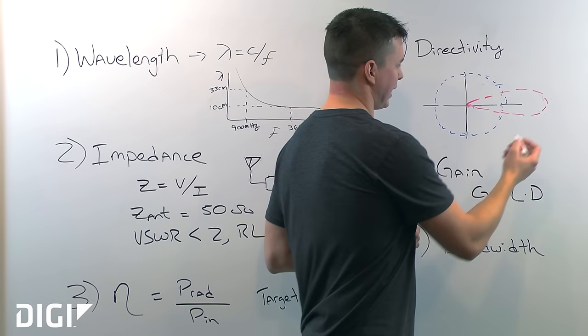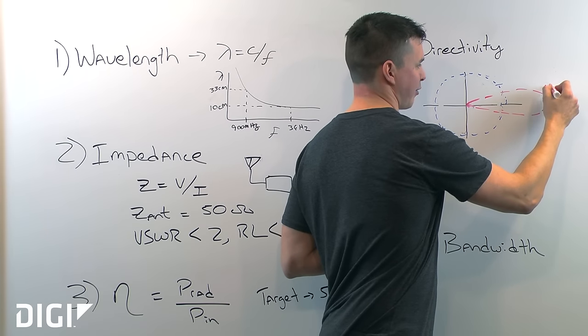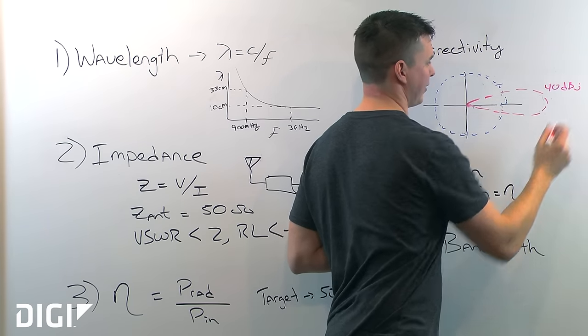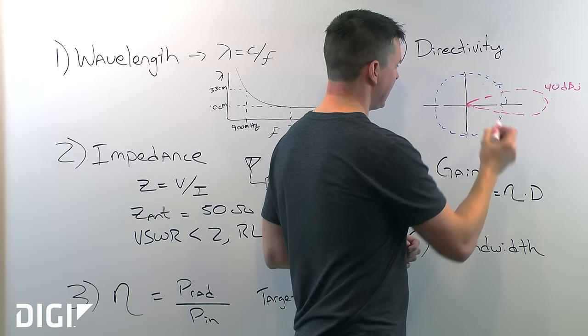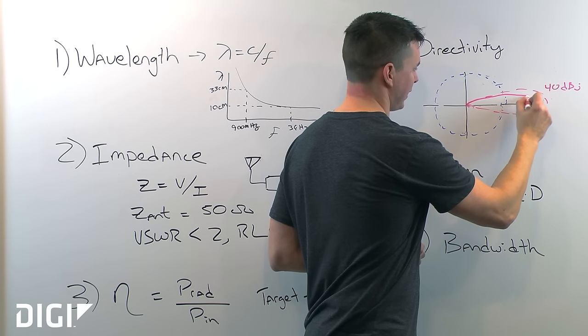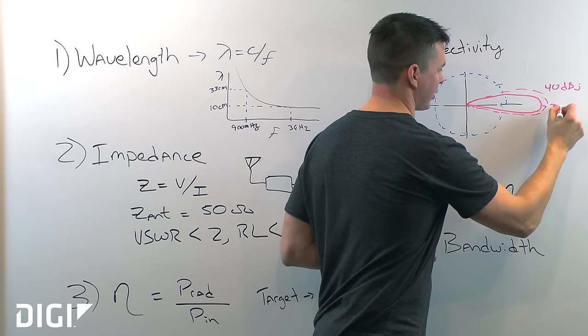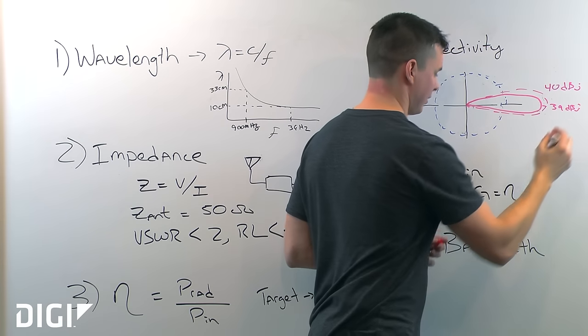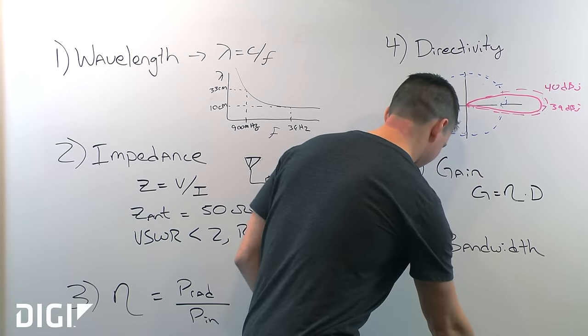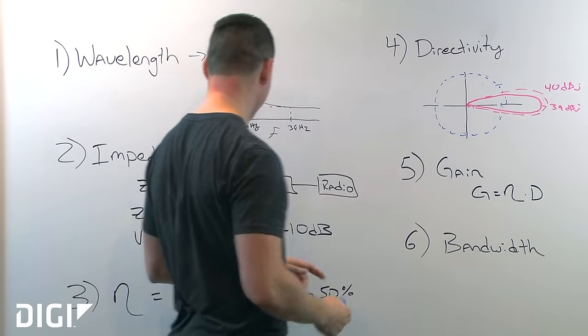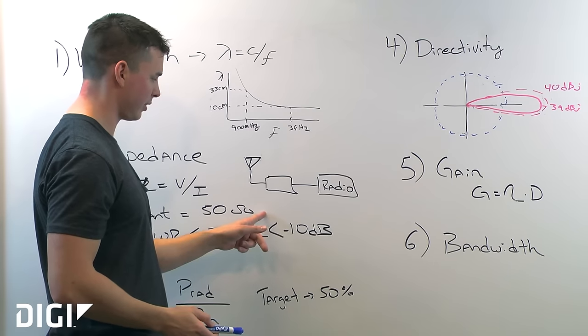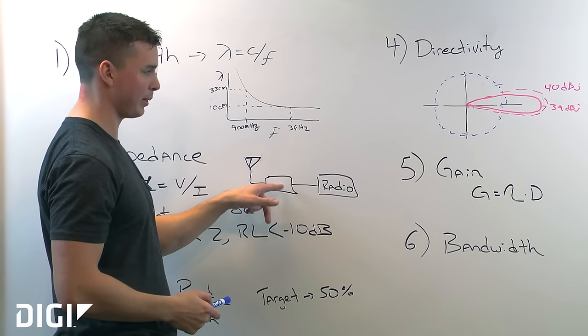So for an example, say your satellite dish antenna has a 40 dBi directivity. The gain is probably going to be somewhere between 38-39 dBi. There's going to be some losses here. You're going to have conductor losses, you're going to have dielectric losses, and then of course we're going to have our mismatch losses. Don't forget you're going to have losses in your impedance matching network.